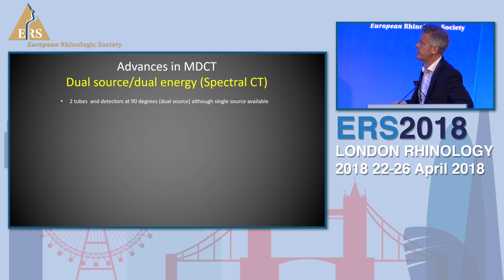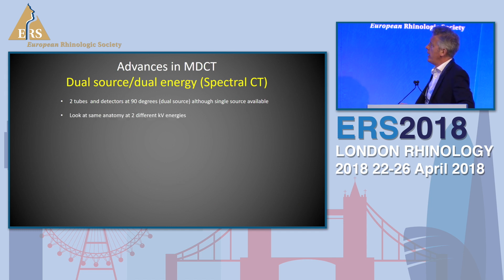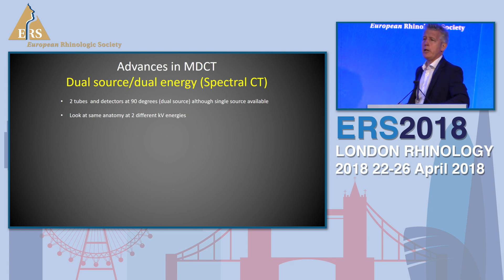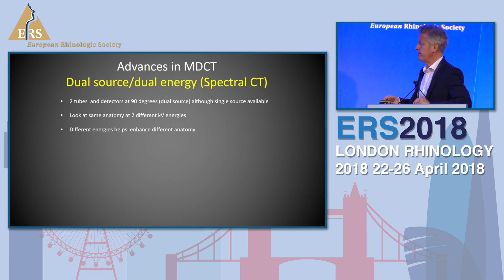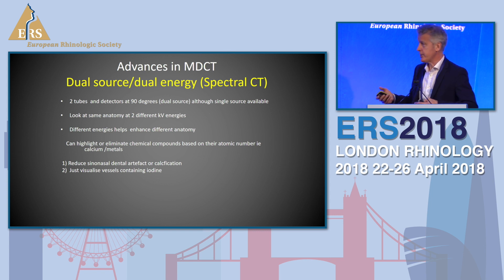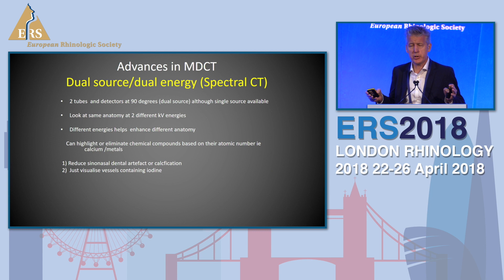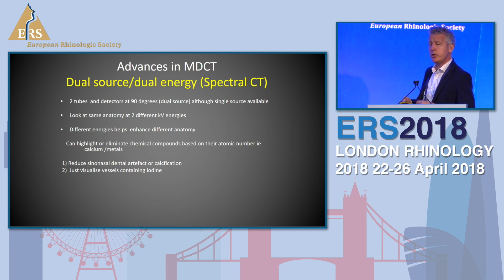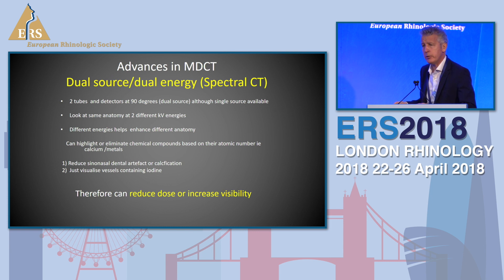There's another advance in multi-detector CT. We can use two different tubes at 90 degrees to each other - it's called dual source, although the process is often now done with a single source - and basically they fire the x-ray at two different energies. This helps you look at different anatomy, highlight compounds based on how dense they are, reduce dental artefact, and if you want to get rid of calcification to look at a narrowed artery you can do that too. So you can decide what you want to view using this dual energy source, and by doing that you can reduce the dose or increase the visibility.